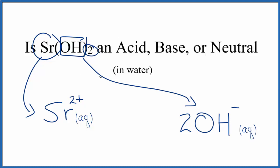This is what happens when we put strontium hydroxide in water. It breaks apart into its ions because it's a strong base. This is Dr. B answering the question whether Sr(OH)₂ is an acid, base, or neutral. It's a base, and it's a strong base. Thanks for watching.